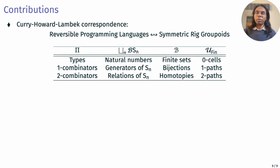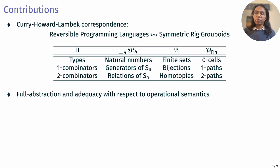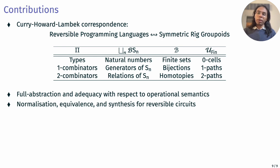Finally, to summarize our contributions, using this semantics, we give a Curry-Howard-Lambek correspondence for this reversible programming language and symmetric groupoids, just like the simply-typed lambda calculus corresponds to Cartesian closed categories. We show that this semantics is fully abstract and adequate with respect to the operational semantics of the language. Using soundness and completeness, we can do normalization by evaluation for reversible circuits, and we get a procedure for deciding equivalence of two reversible circuits by comparing the normal forms. We can also synthesize reversible circuits from the truth tables expressed as permutations.